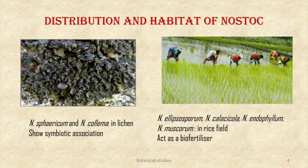In spite of that, Nostoc fixes atmospheric nitrogen and provides it to the host, thus they show symbiotic association. Nostoc spirigerum and Nostoc colemanium are found in lichen and show symbiotic association. Lichen is the plant body made up from the association of algae and fungi. Algae give food material to the fungi, while fungi give shelter and also protect Nostoc from desiccation.